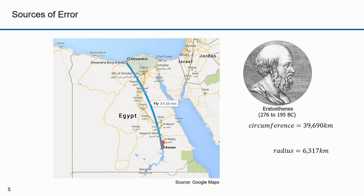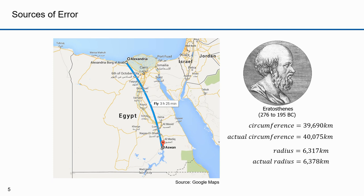The accuracy of Eratosthenes' measurement would have been reduced by the fact that the sun is not directly south of Alexandria, and also that the sun appears as a disk at a finite distance rather than a point source at infinite distance. Overland distance measurements were also not reliable, especially for travel along the Nile, which meanders. Given these errors, the accuracy is surprising. The actual circumference of the earth is 40,075 kilometers — Eratosthenes was within 1%. His radius was only off by 61 kilometers. Amazingly accurate for his time.